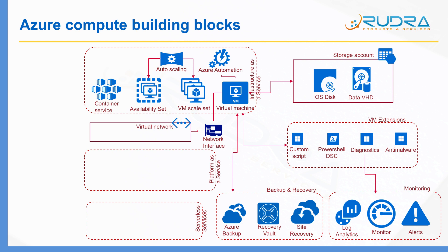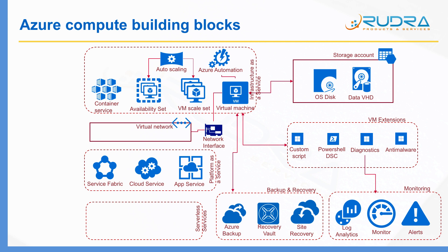The next thing is Platform as a Service. Within Platform as a Service, we have Cloud Service, using which you can deploy a web role or worker role and deploy applications. Cloud Service is more like a managed hosted environment where you don't need to worry about patching and upgrading the operating system — Microsoft Azure takes care of that for you. The latest evolution of Cloud Service is App Service, using which you can deploy web applications, mobile back-end services, and API apps. And if you have a requirement to deploy microservices-based applications, you can use Service Fabric. All of these PaaS offerings can be connected to a Virtual Network.